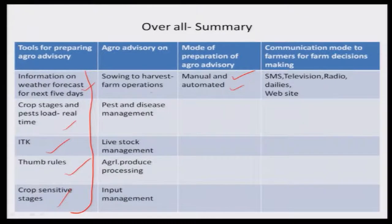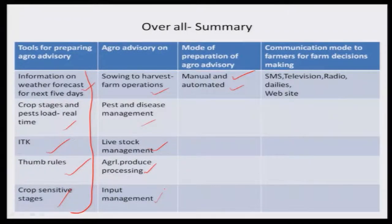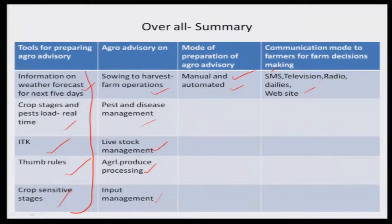Advisories can cover: sowing to harvest, pest and disease management, livestock management, agriculture produce processing, and input management. Based on these inputs, you can prepare advisories for these areas either manually or in an automated way, and communicate them to farmers through SMS, television, radio, and dailies. If literate farmers are available, they can also browse through the website.